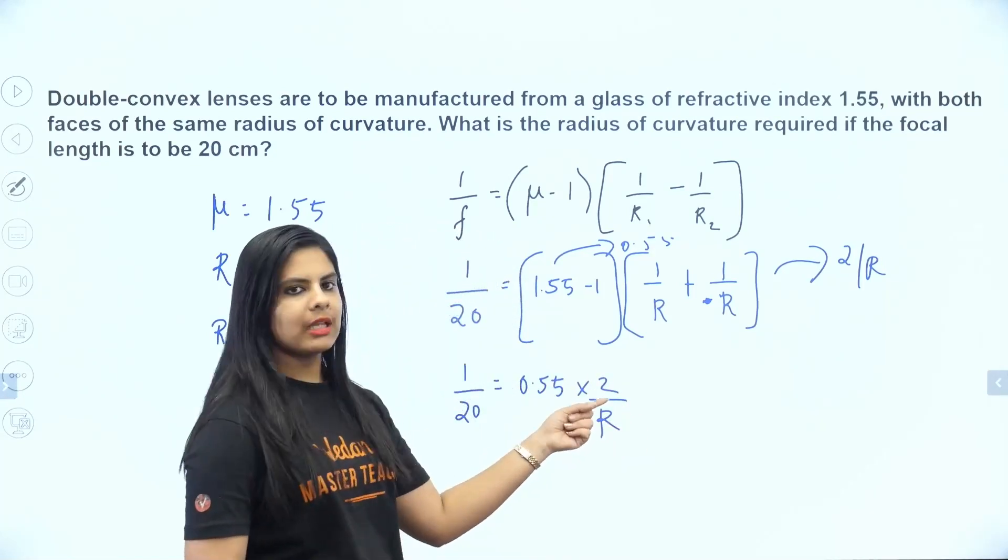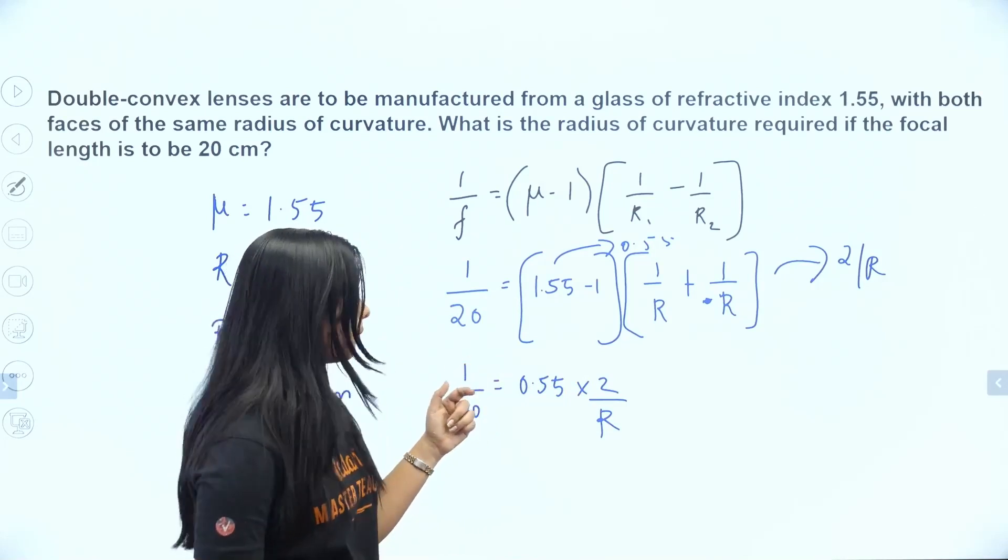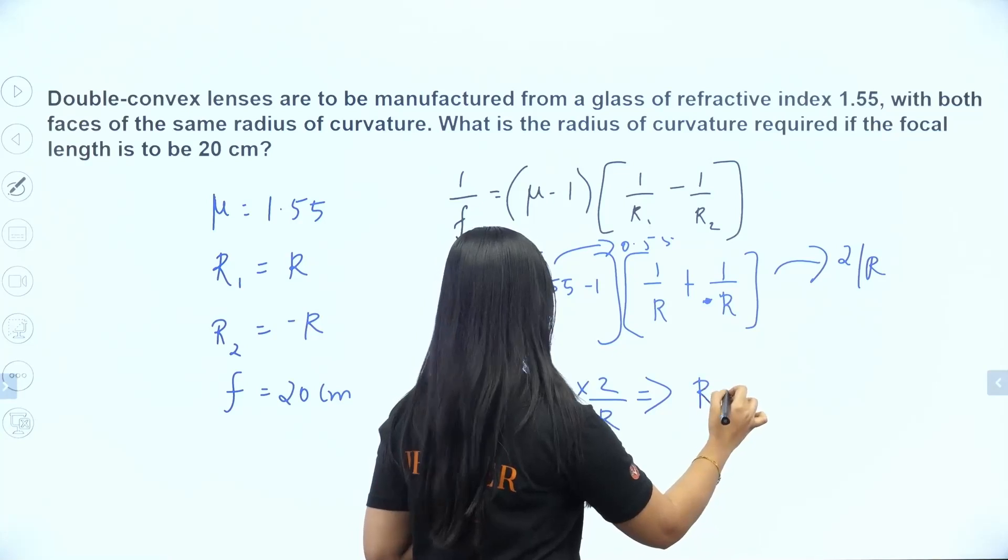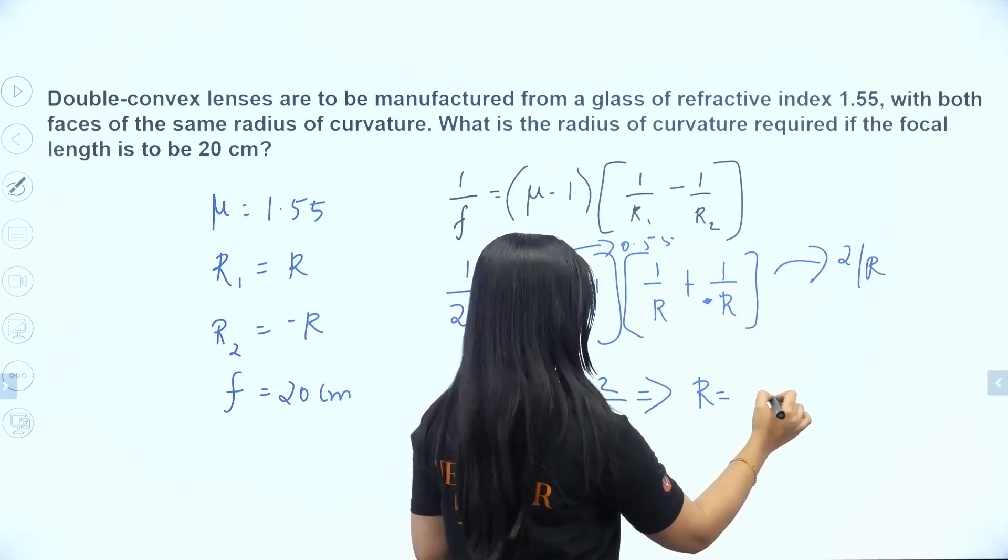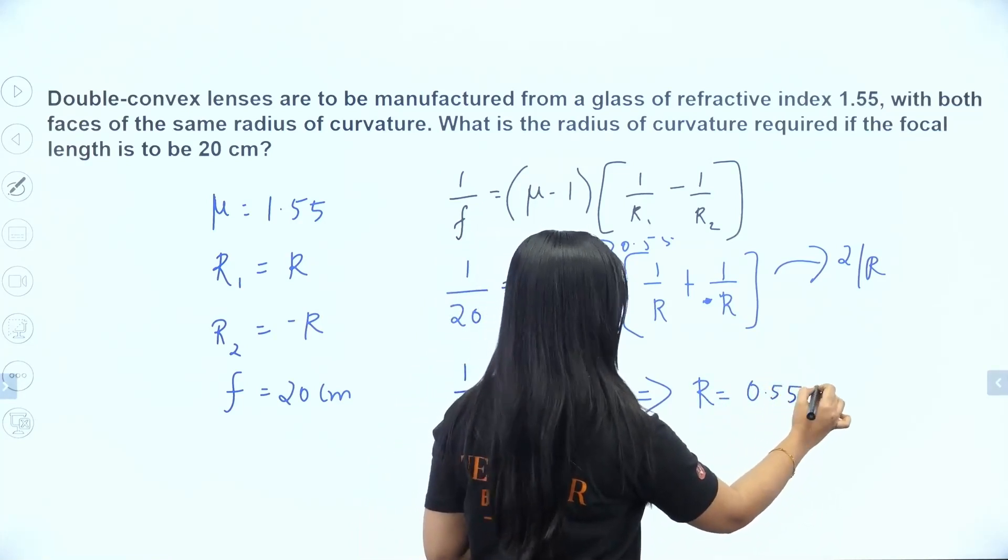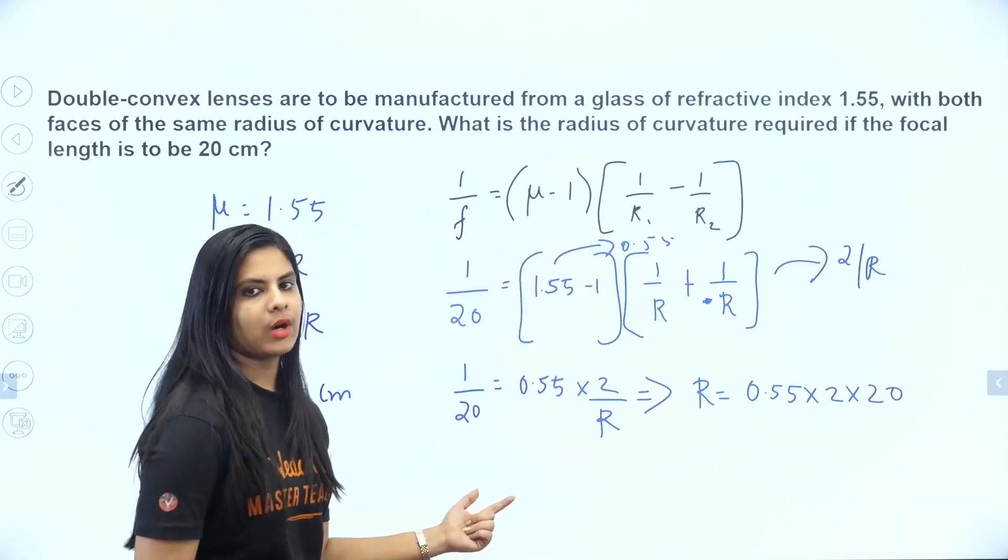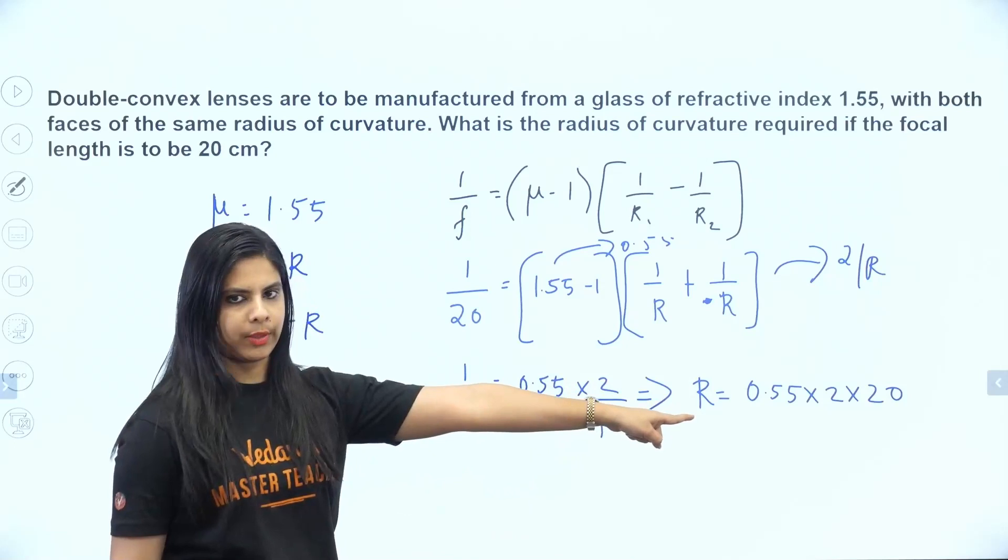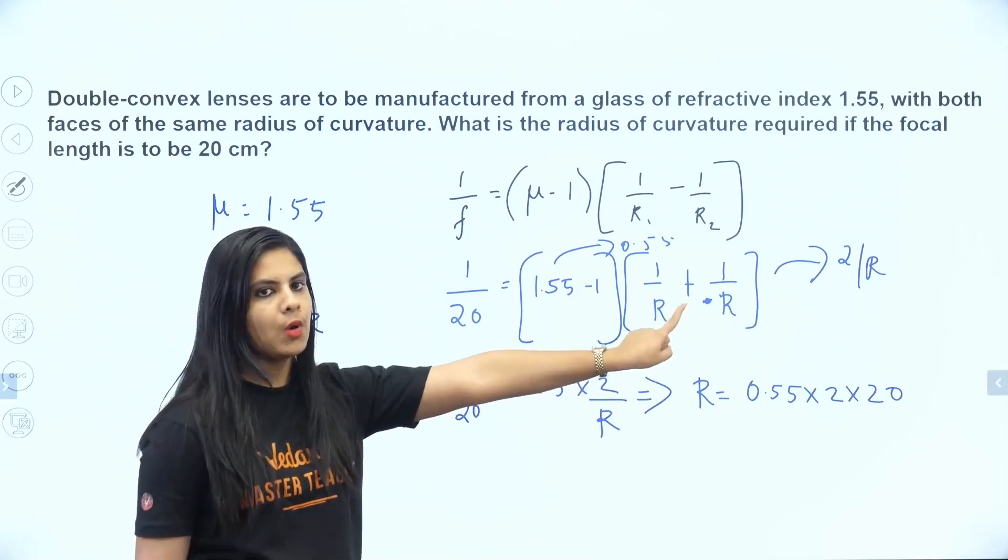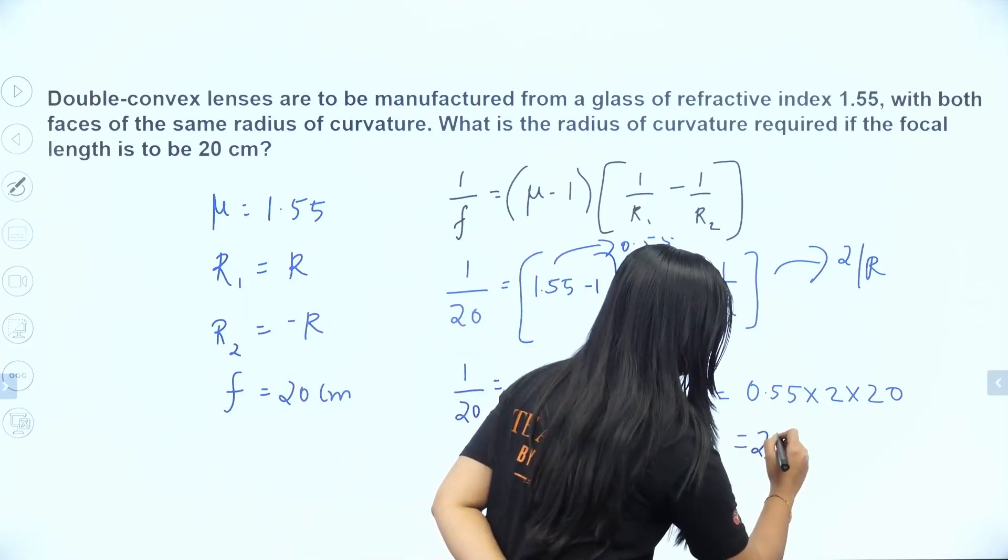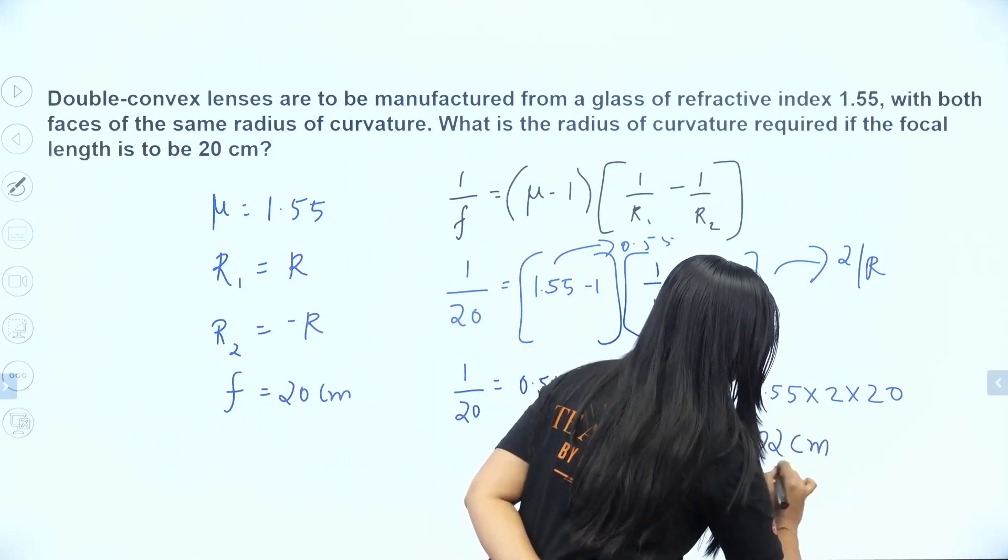So the value of R equals 0.55 times 2 times 20, which gives us 22 centimeters radius.